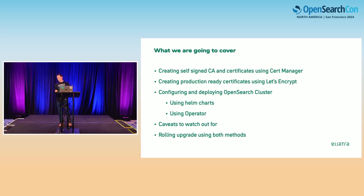What we're going to cover today: we're going to create a self-signed certificate — it's always a pain point for users. We're going to create a production-ready certificate using Let's Encrypt so that the browser is not complaining about unknown certificates. And we're going to use Helm charts and operator to deploy it in Kubernetes, looking at the caveats of both methods and differences in rolling updates. I'm assuming you are aware of what Kubernetes is and how to configure security on OpenSearch, like internal users, roles, and role mappings.